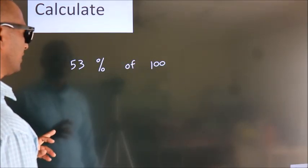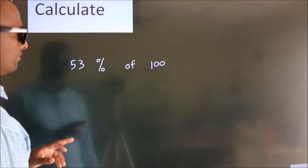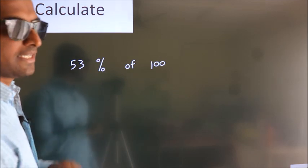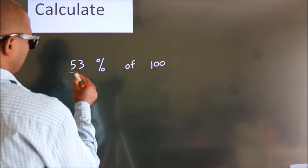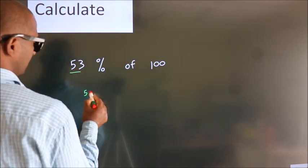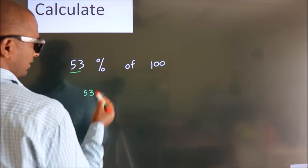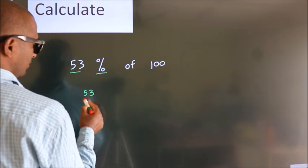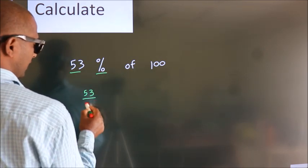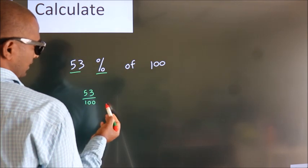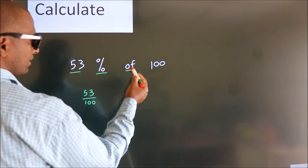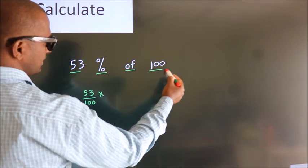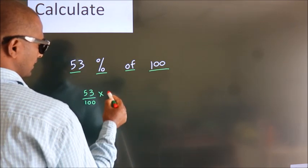Calculate 53% of 100. How do we calculate this? This number as it is, you write. In place of the percentage sign, we divide by 100. In place of 'of', we write 'into' (multiply). This number as it is.